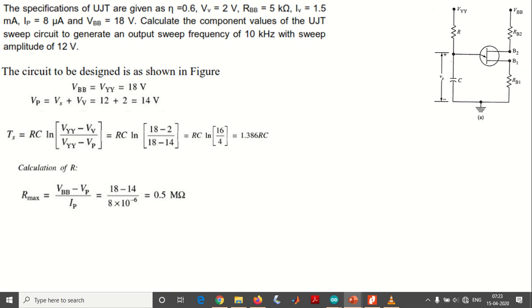Let's find the minimum value. R minimum equals VBB minus VB by IV. It's 18 minus 2 by 1.5 milliamps, so it goes to 10.666 kilo ohms. We get a range of values in which the R value could be, between 10 kilo ohms to 0.5 mega ohms. Let R equals 100 kilo ohms.